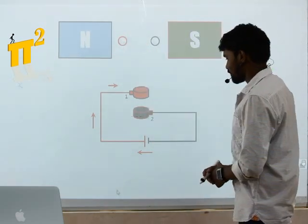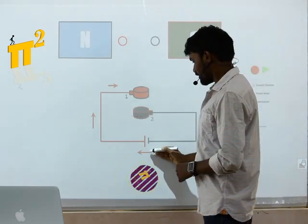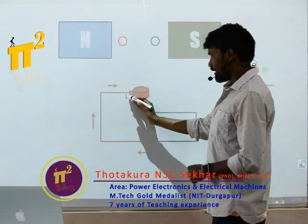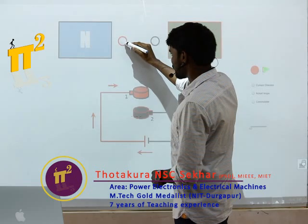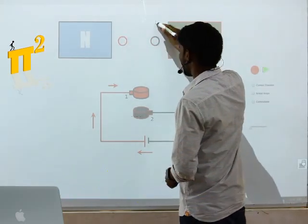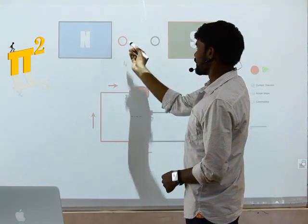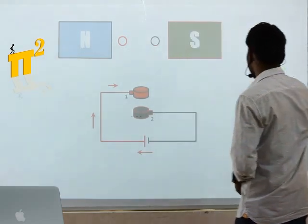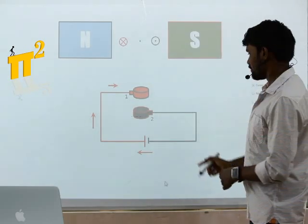If you observe the current direction, current is going from the positive plate into brush number one, to the red slip ring, and this red slip ring is in connection with the red conductor. Again it's a loop - current is coming out. So here current is coming out, here current is going in. If you look at the current directions in these two conductors, this is cross and this is dot.